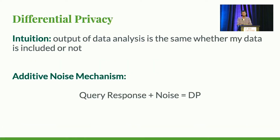For those of you who don't know, differential privacy provides an information-theoretic guarantee to a mechanism that it doesn't reveal information about an individual. More specifically, if we call a mechanism on two different data sets where the only difference between them is the data of one individual, the output of that mechanism should be just about the same. For secure aggregation, the way we're going to satisfy differential privacy is with additive noise — specifically, Gaussian-distributed noise added to the sum of vectors.